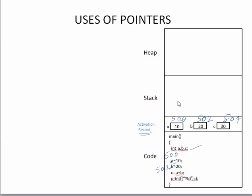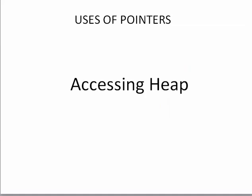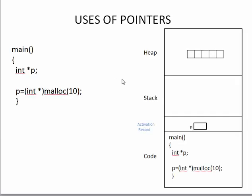Anything other than the stack is accessible by the program indirectly — not directly. Only the stack memory is directly accessible. If the program wants to access memory present in the heap, it cannot access that heap memory directly. So let us see what it has to do to access heap memory — and this is where the first usage of a pointer comes in.